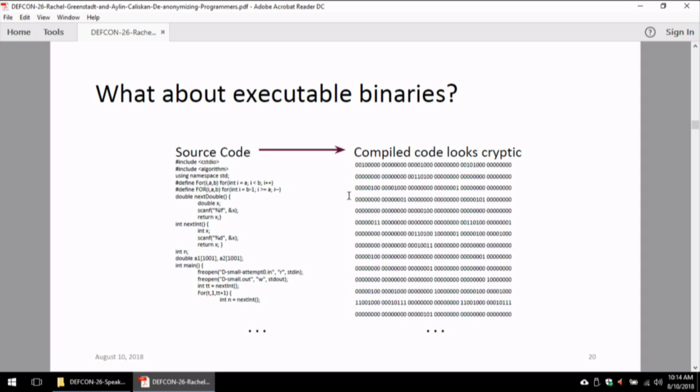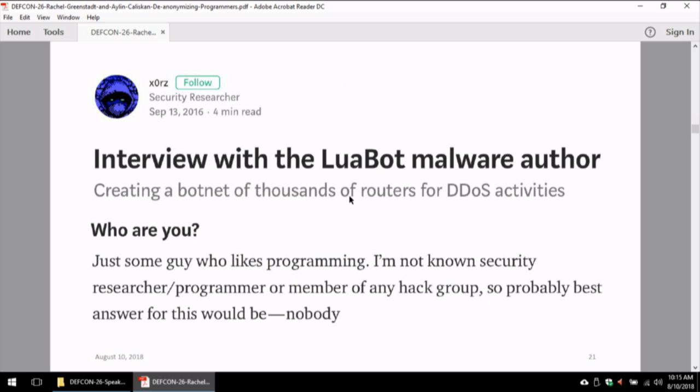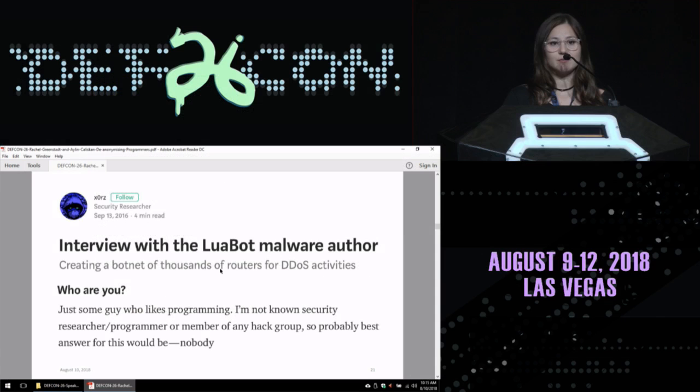What about executable binaries though? When we compile code, it goes through various transformations. Does coding style remain in compiled code? We have a few lines of code and in binary, it looks quite cryptic. We cannot tell much, but thanks to improvements in reverse engineering methods, we can generate rich feature sets even from binaries. In this case, we know that malware authors would like to remain anonymous and do not have any identifying information out there in the public. And there was this fun interview with the law about malware author.